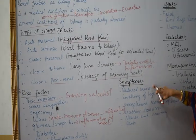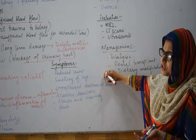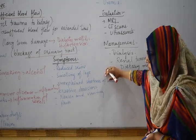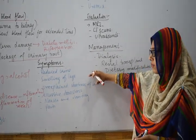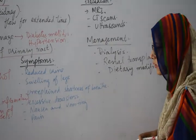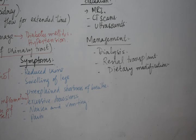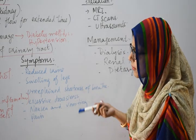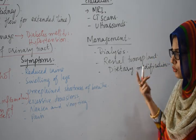Signs and symptoms include: reduced urine output, because the rate of filtration decreases and reabsorption decreases, so urine formation is reduced. Fluid accumulation occurs — fluid builds up in the body, usually in the legs, causing swelling. Unexplained shortness of breath occurs because when blood is not filtered, breathing is affected. Then excessive drowsiness, nausea, vomiting, and pain are also symptoms.